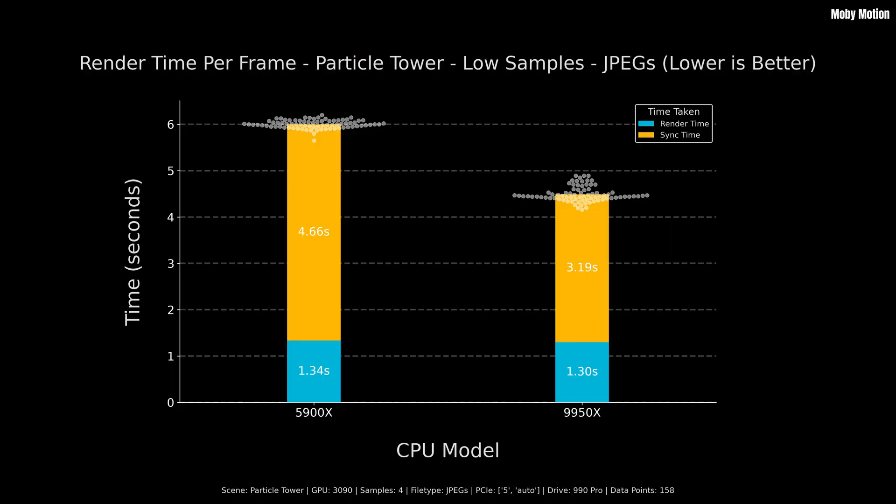These are the same results broken down into cycles render time and sync time — the time it takes to prepare the scene and synchronize things between your system and your graphics card. The total time per frame is 33.6% faster on the 9950X. When we look at just the render time component — the ray tracing component — the fast CPU is only 2.7% faster. It's the sync time that's almost 50% faster: 46.2% faster on the faster CPU.